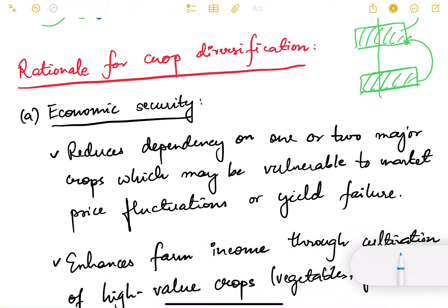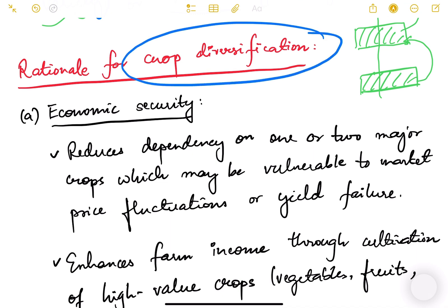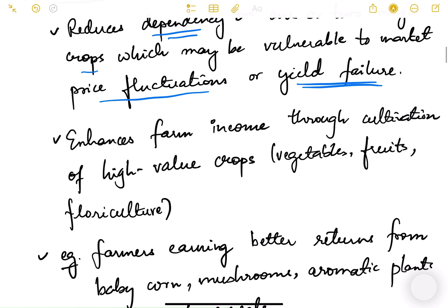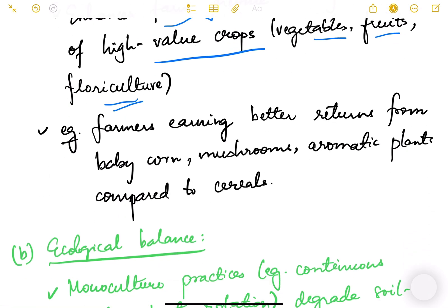Now what is the rationale behind crop diversification? One is economic security. If you diversify your cropping patterns, economic security is achieved because it reduces dependency on one or two major crops which may be vulnerable to market price fluctuations or yield failure due to climatic changes. It enhances farm income through cultivation of high-value crops like vegetables, fruits, and floriculture. For example, farmers earn better returns from baby corn, mushrooms, and aromatic plants compared to cereals.